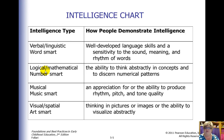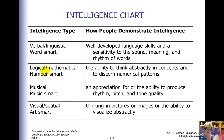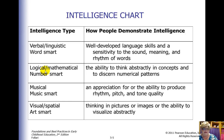Next is logical-mathematical — number smart — where children have the ability to think abstractly and to discern numerical patterns. You can already see a 50-50 split here between right-brained and left-brained people. The right-brained person tends to be more verbal and musical, while the left-brained person tends to be more logical and mathematical. As a broad generalization, many boys lean left-brained and many girls lean right-brained, though that is certainly not universal.